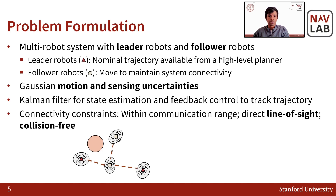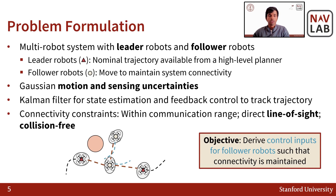For connectivity, we consider two robots to be connected only if they are within a specific communication range of each other, they have a direct line of sight, and are also collision-free. Thus, given all this information, the final objective of our algorithm is to derive control inputs for the follower robots such that connectivity is maintained.